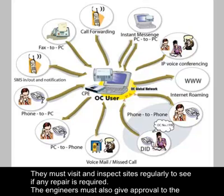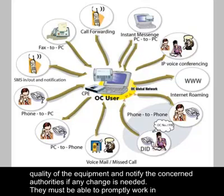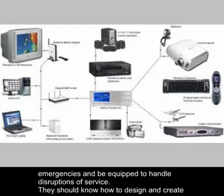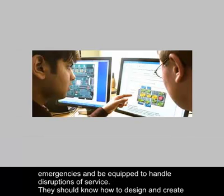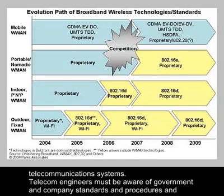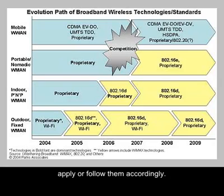The engineers must also give approval to the quality of the equipment and notify the concerned authorities if any change is needed. They must be able to promptly work in emergencies and be equipped to handle disruptions of service. They should know how to design and create telecommunications systems. Telecom engineers must be aware of government and company standards and procedures and apply or follow them accordingly.